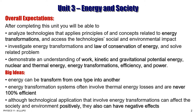Key concepts include work, kinetic energy, gravitational potential energy, nuclear energy, and thermal energy, along with energy transformation from one form to another and the efficiency of that transformation. The big idea is that energy can be transformed from one form to another and is never 100% efficient — it always involves thermal energy losses such as friction.